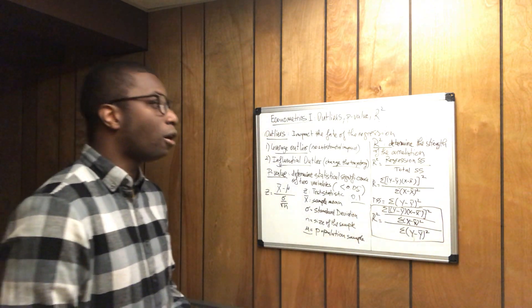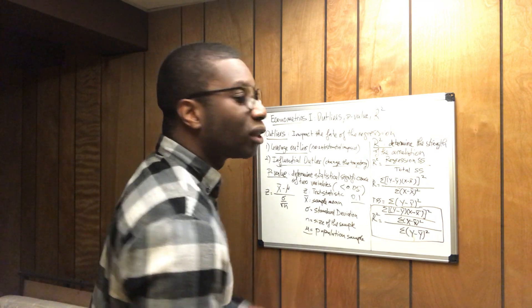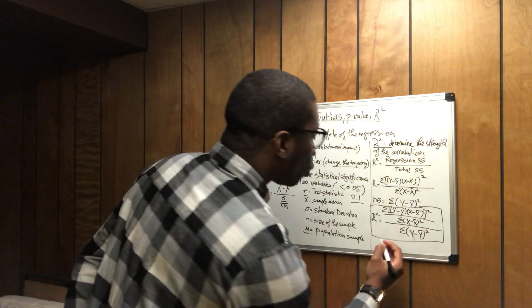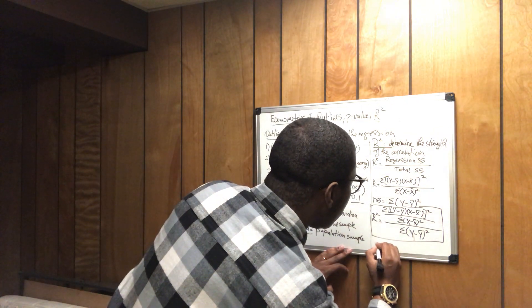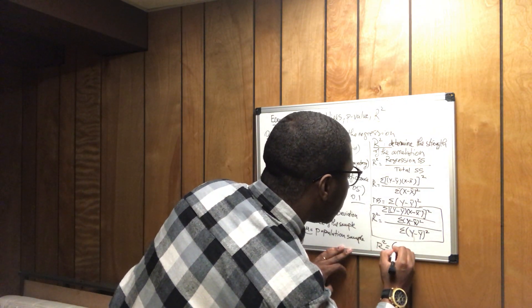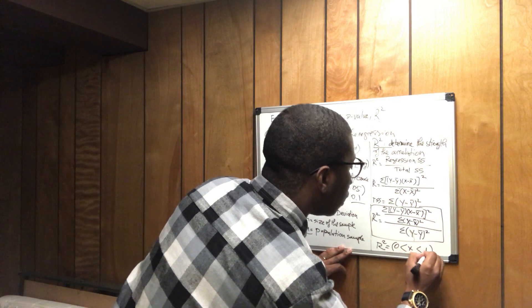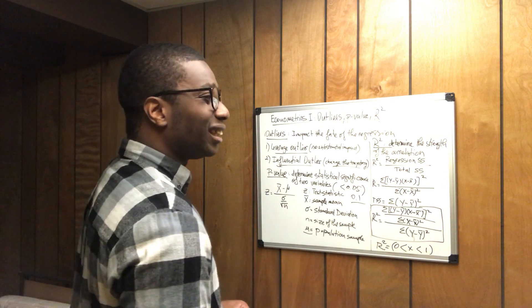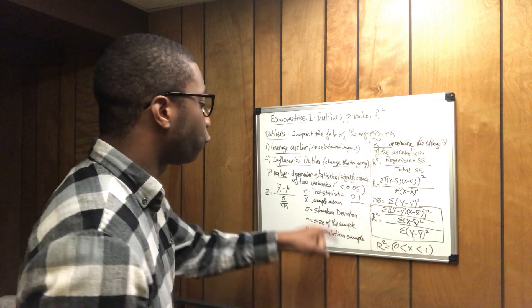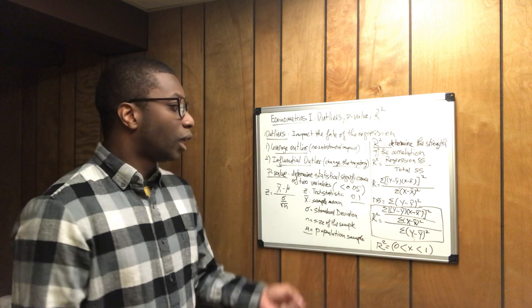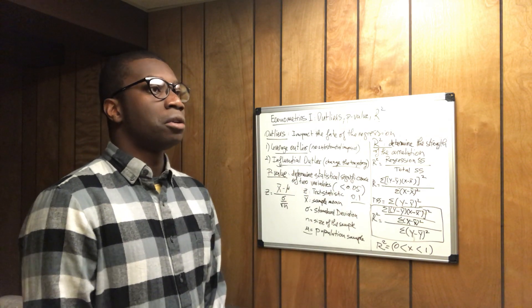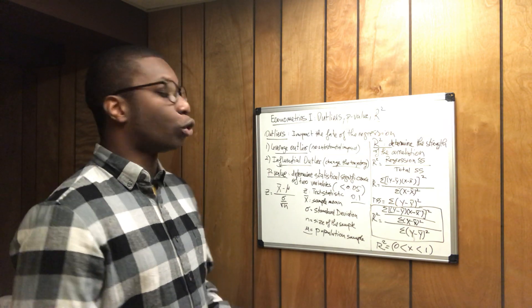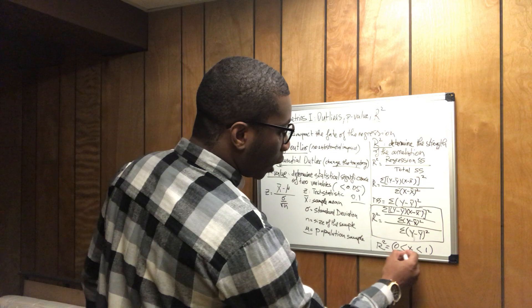This is how you calculate r-squared. R-squared determines the strength of your correlation. It is bounded between zero and one. If your r-squared is around 0.2, the correlation of your regression is weak. If it's 0.7, 0.8, or 0.9, it's pretty strong.